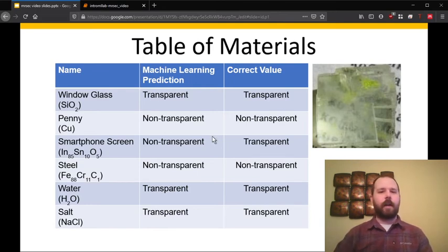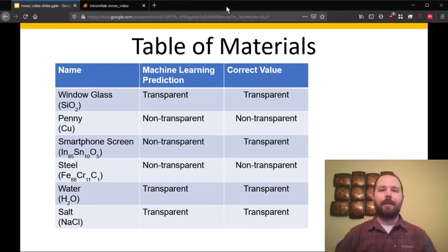So it looks like it got all these correct except for one. It looks like it thought the smartphone screen was not transparent. So we can see in this case that the model is not perfect. It clearly has room to improve but thankfully that's one of the things that machine learning models are really good at. We've only given it 400 examples of previous materials here. So if we give it more and more examples it can hopefully learn these patterns better and continue to improve as it gets more data.